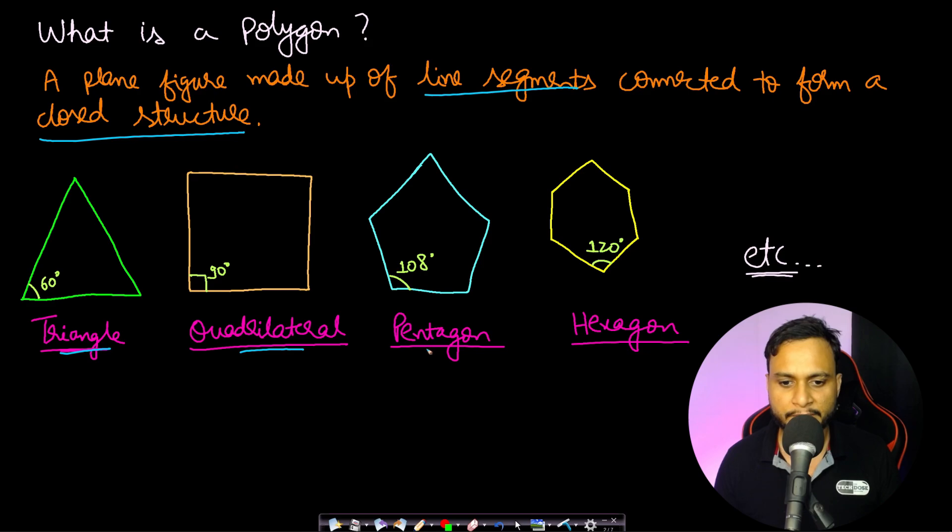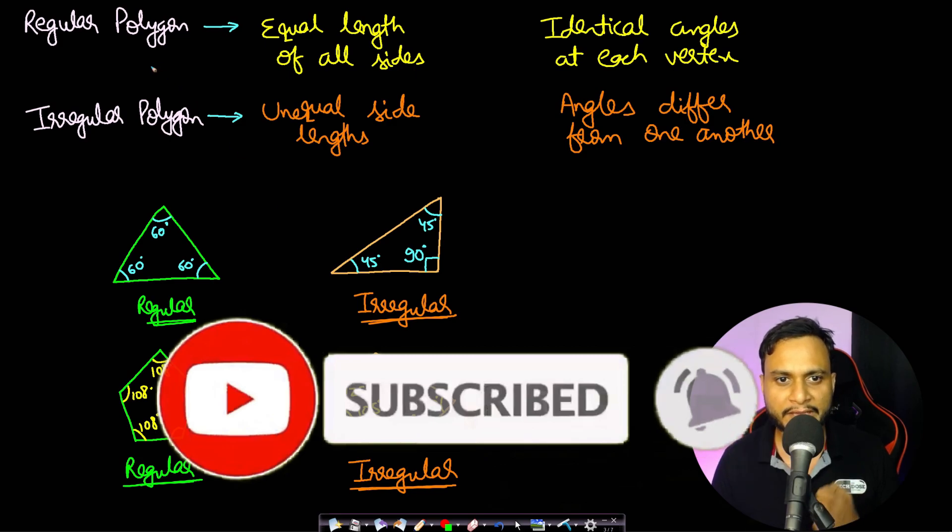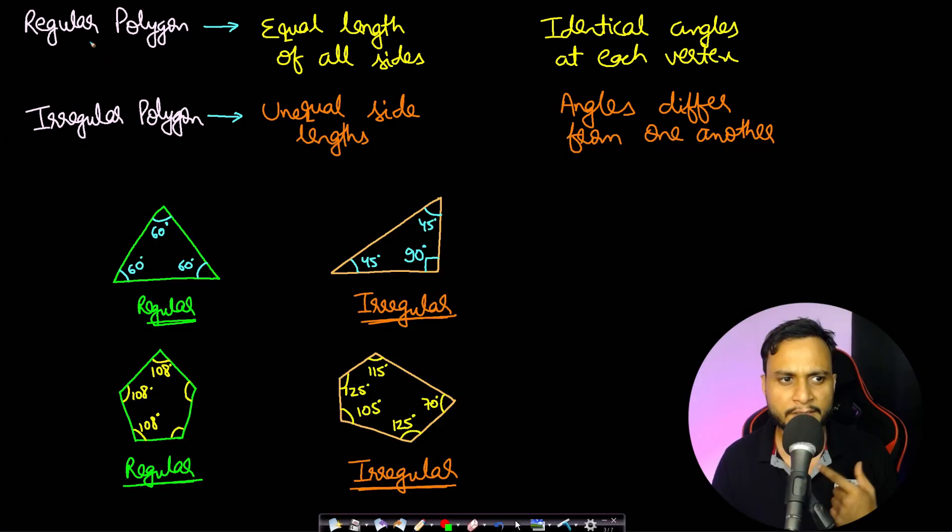Now each of the polygon can be either a regular polygon or an irregular polygon. So a regular polygon is one where you have all the sides of equal length and all the angles are identical for each vertex. An irregular polygon is one where the side lengths may be unequal, so generally a pair will exist which are not equal, and the angles will differ from one another.